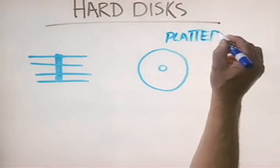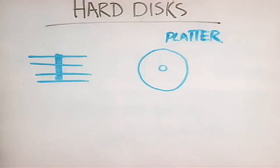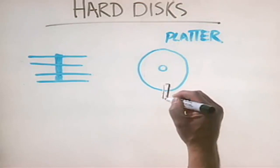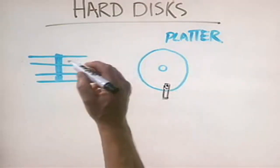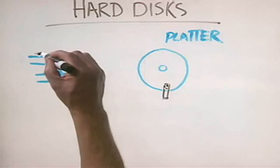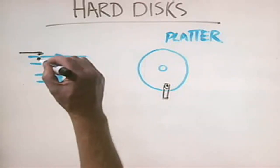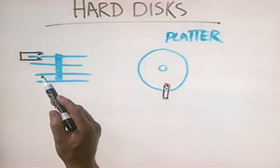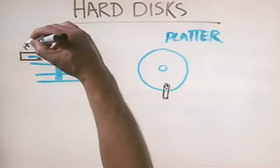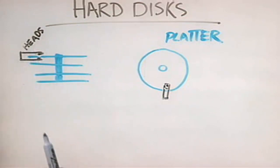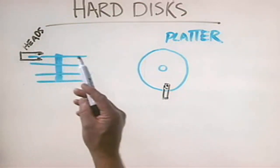In order to read and write information, we use read and write heads. Every platter inside your hard disk drive has two read and write heads — one for the top and one for the bottom of each platter. An important thing to understand about these heads is that they don't actually touch the surface of the platter.